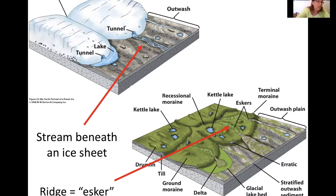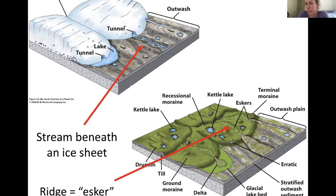The sediment is probably frozen in the winter, which helps accumulate it and keep it in the sediment pile. This was the last Wisconsin glaciation — the most recent glaciation — which ended around 20,000 years ago, when the ice sheet started to retreat. I'll get into how we know that.